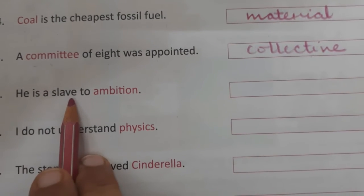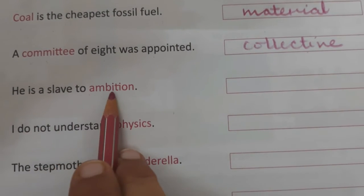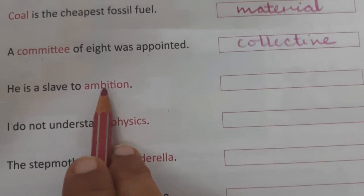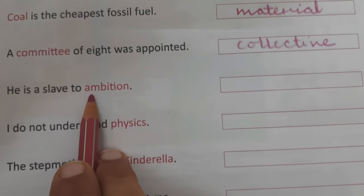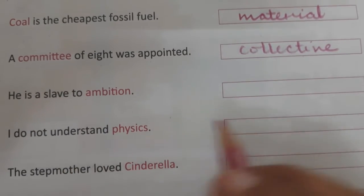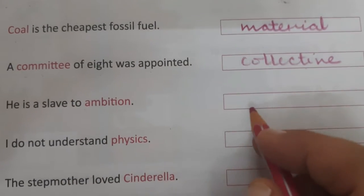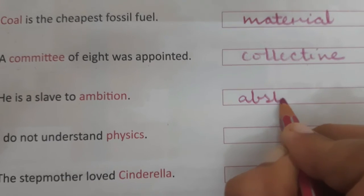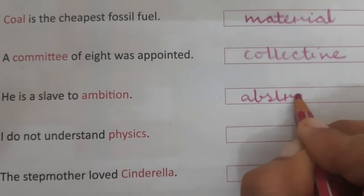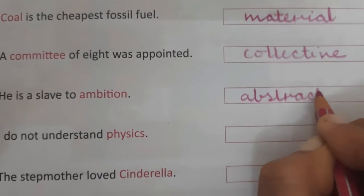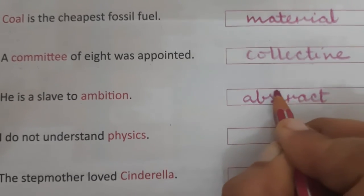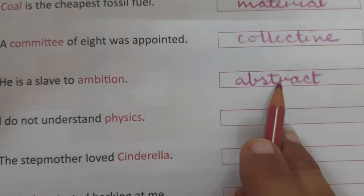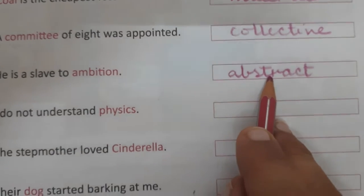Number 6: He is a slave to ambition. 'Ambition' is an abstract noun — we cannot see or touch it. It's a feeling, that's why it's an abstract noun.